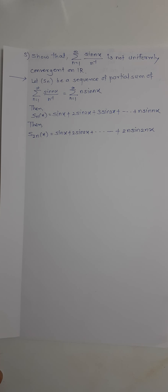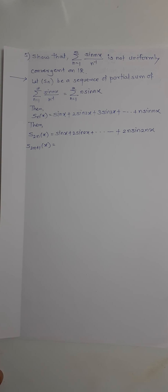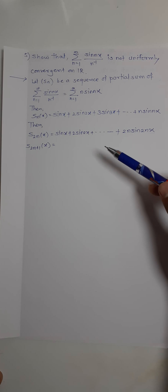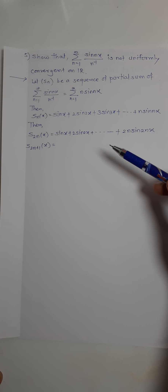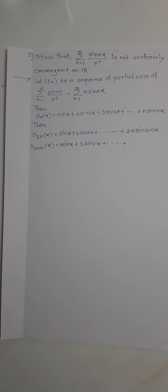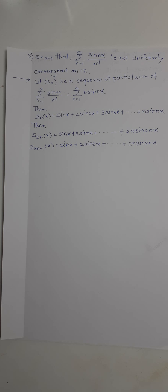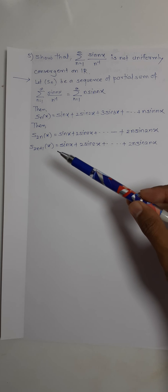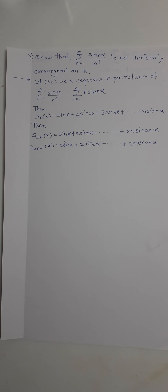Similarly, we can find S_{2n+1}(x). The first terms are the same: sin(x), 2·sin(2x), 3·sin(3x), and we go up to 2n·sin(2nx) as the second-to-last term, and the last term is (2n+1)·sin((2n+1)x), since we add up to 2n+1.